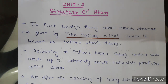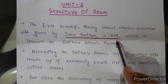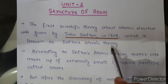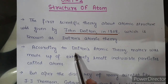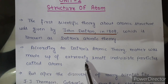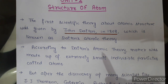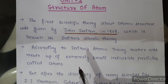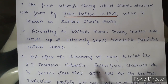The first scientific theory about atomic structure was given by John Dalton in 1808, which is also known as Dalton's atomic theory. We have already discussed Dalton's atomic theory in the first unit. According to Dalton's atomic theory, matter was made up of extremely small individual particles known as atoms, and atoms can neither be created nor be destroyed. But this theory was found to be wrong after the discoveries of scientists like J.J. Thomson, Goldstein, Rutherford, Chadwick, etc.